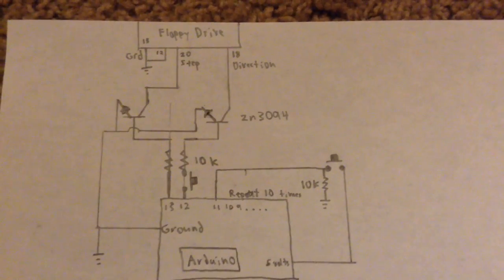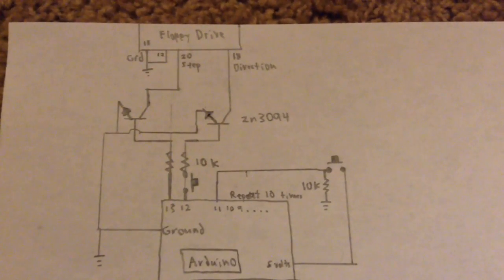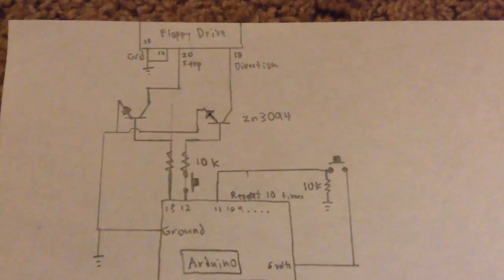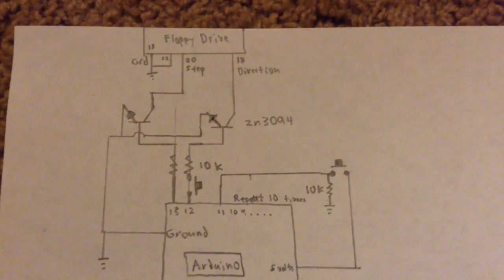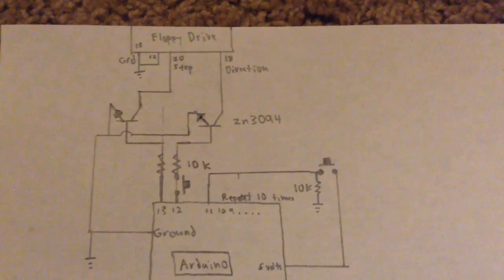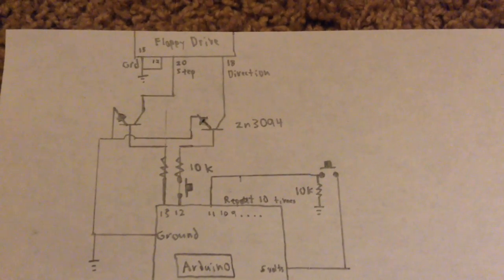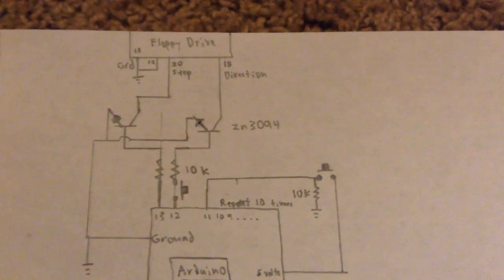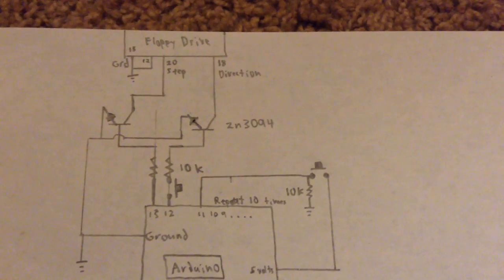This is the circuit diagram of how I connected my floppy drive to the Arduino. Originally I tried to connect the floppy drive pins directly to the Arduino, but that didn't seem to work for me. So I had to use two small NPN transistors. I used the 2N3094 transistor.